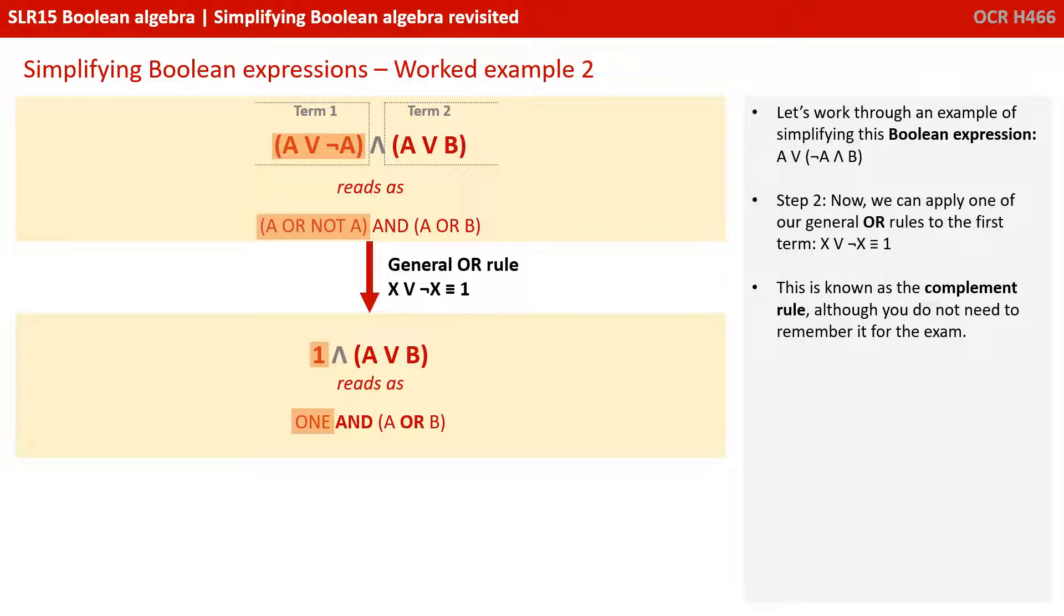Step two: We can now apply one of our general OR rules to the first term. X OR NOT X is equal to one. We've got A OR NOT A. This is known as the complement rule.